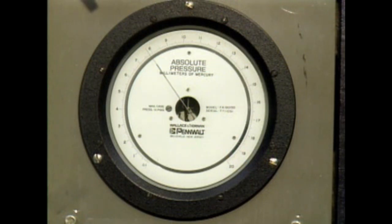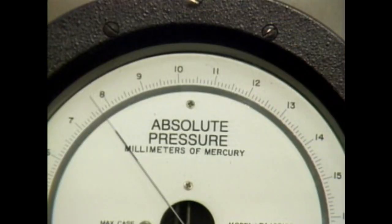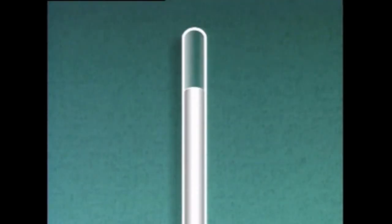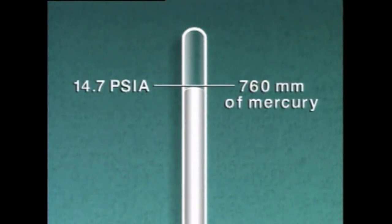Absolute pressure isn't always expressed in PSIA. For example, this instrument indicates absolute pressure in millimeters of mercury. Millimeters of mercury refers to the height of a vertical column of mercury that a given pressure will support. For instance, atmospheric pressure of 14.7 PSIA will support a vertical column of mercury that's about 760 millimeters in height.